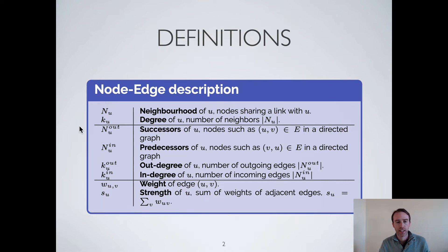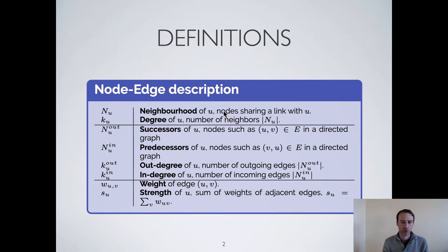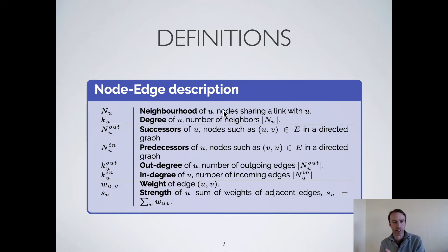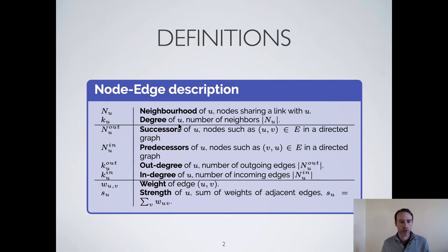We define the neighborhood of a node as all the nodes that are connected to an original node. So the neighborhood of n are all the nodes connected to n by an edge. We define the degree of a node u as the number of neighbors — so how many connections.